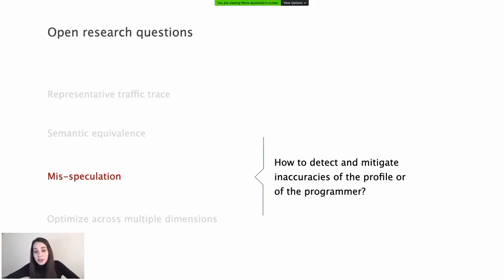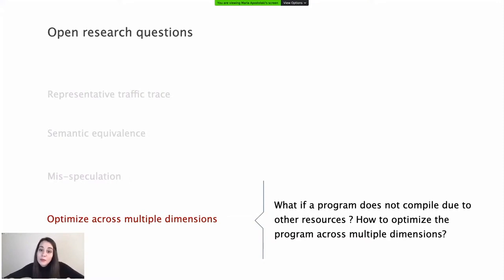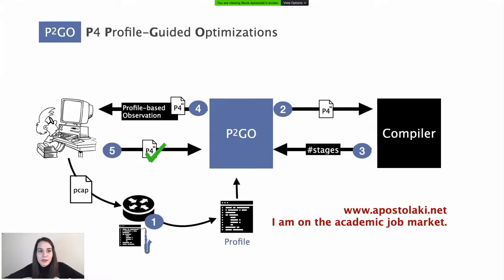Nokia's talk from yesterday about online safety assurance nicely correlates here. Finally, P2Go only targets stages. While this is a good first step, we need to think about how to address other resources such as memory, PHVs, and so on. Optimizing across multiple dimensions increases the optimization space, so how can we best navigate this space? With this, I conclude my talk about P2Go, a system that bridges the gap between the programmer and the compiler.